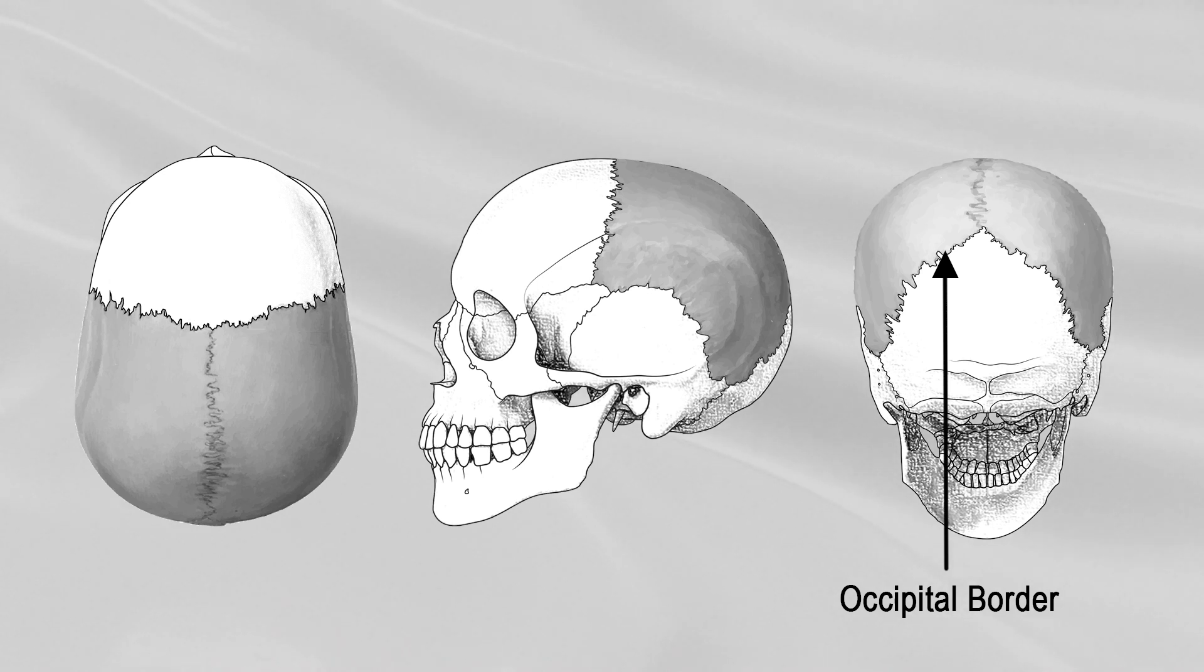The occipital borders of both parietal bones articulate with the occipital bone, forming the lambdoid suture.